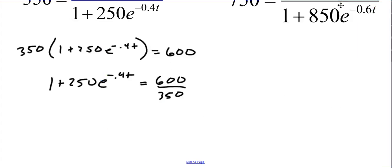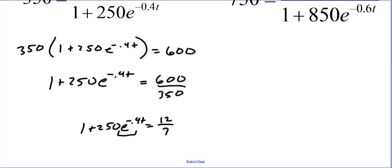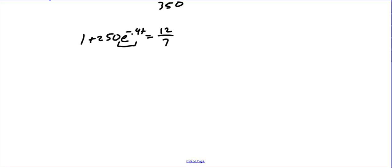Let's keep it in fraction form if possible. We have 12 over 7, and that's going to equal 1 plus 250 e to the negative 0.4t. From here, I'm going to subtract 1. I'm going to get the exponential by itself. So doing that, I subtract 1 from both sides, we have 250 e to the negative 0.4t.